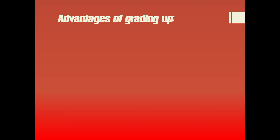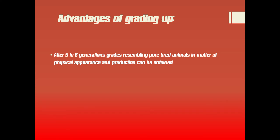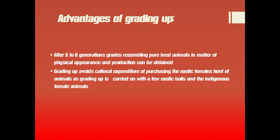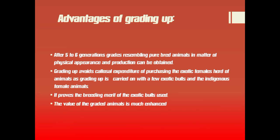There are advantages and disadvantages of grading up. Advantages include: after five to six generations, grading resembles pure breed animals in terms of physical appearance and desired production can be obtained. Grading up avoids the colossal expenditure of purchasing exotic female herds, as it is carried on with only a few exotic bulls and indigenous female animals. It also proves the breeding merit of the exotic bulls used and the value of the graded animals is much increased.